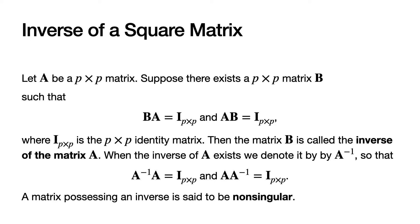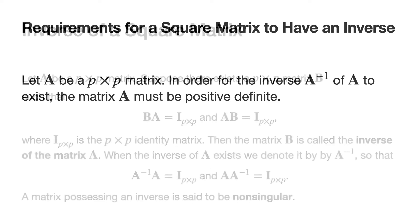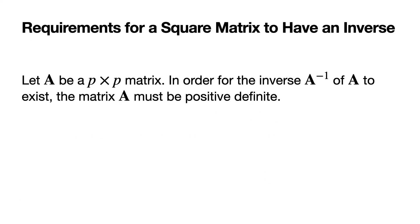A matrix possessing an inverse is said to be non-singular. Now, when will the inverse of a square matrix exist? Let A be a P by P matrix. In order for the inverse of A to exist, the matrix A must be positive definite. We defined what it means for a square matrix to be positive definite a few slides ago, and so a square matrix A has to be positive definite in order for the inverse of that matrix to exist.